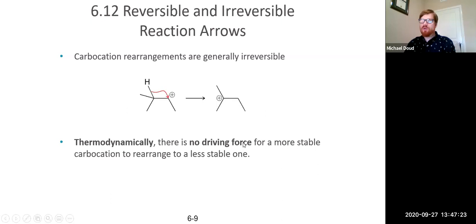Carbocation rearrangements are irreversible. That's because, of course, you form a more stable carbocation when you do an arrangement, if you do it correctly. If you do it wrong, then obviously you messed up. But if you do it correctly, then you're ending up with a much more thermodynamically stable carbocation. And so there's no reason that you'd ever do the opposite rearrangement. So carbocation rearrangements are irreversible.